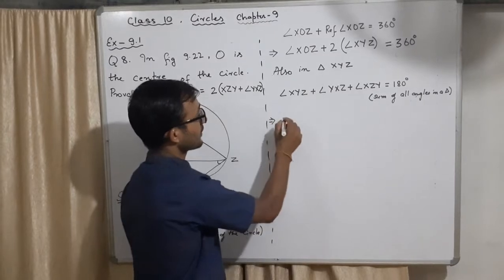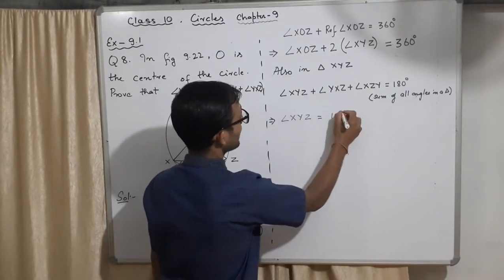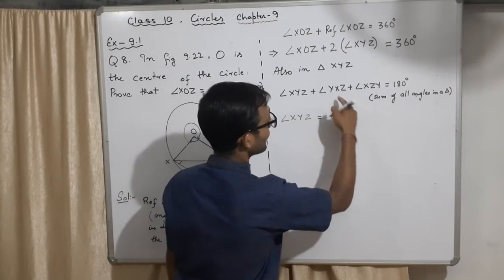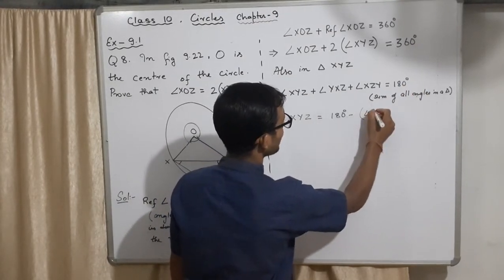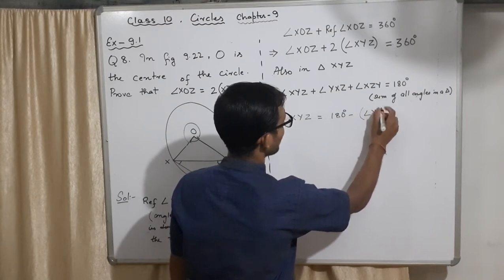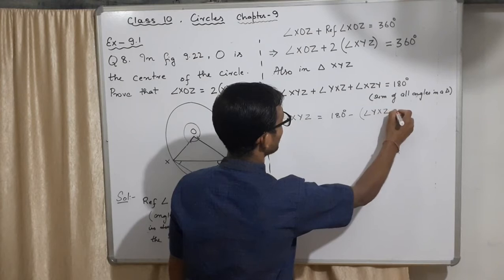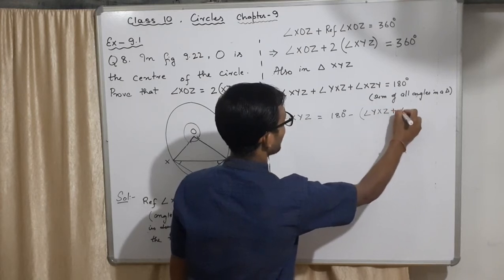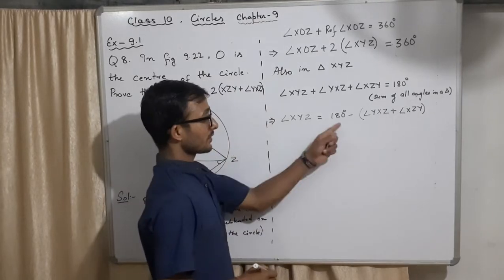∠XYZ equals to 180 degrees minus these two will go on this side, both will be minus. ∠XYZ plus ∠XZY plus ∠XZY, more than minus, so together inside the bracket.